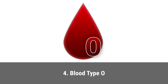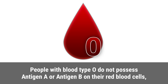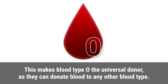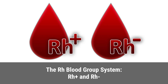People with blood type O do not possess antigen A or antigen B on their red blood cells, but they have both A and B antibodies in their plasma. This makes blood type O the universal donor, as they can donate blood to any other blood type. In addition to the ABO system, blood types are further classified based on the Rh factor.